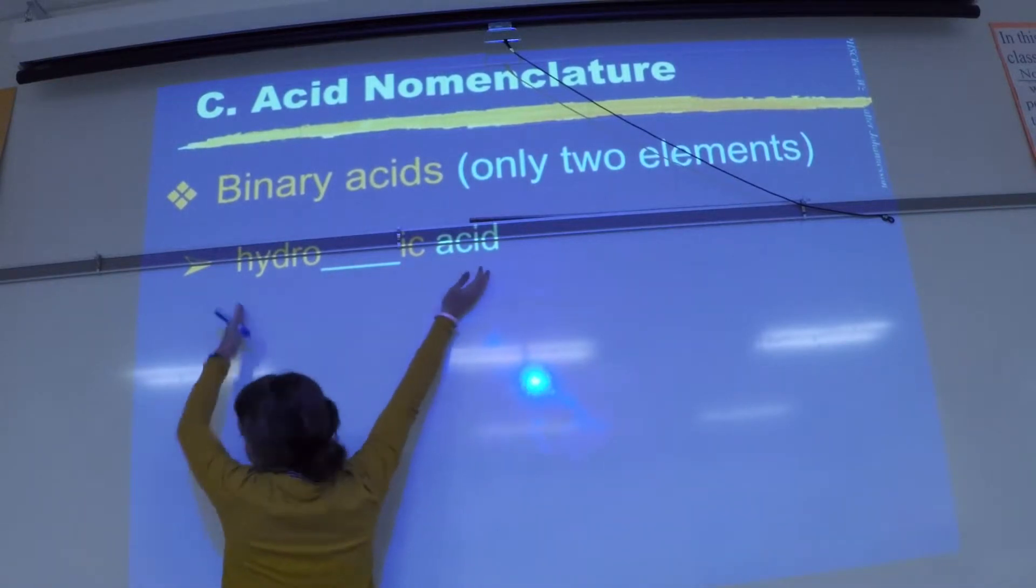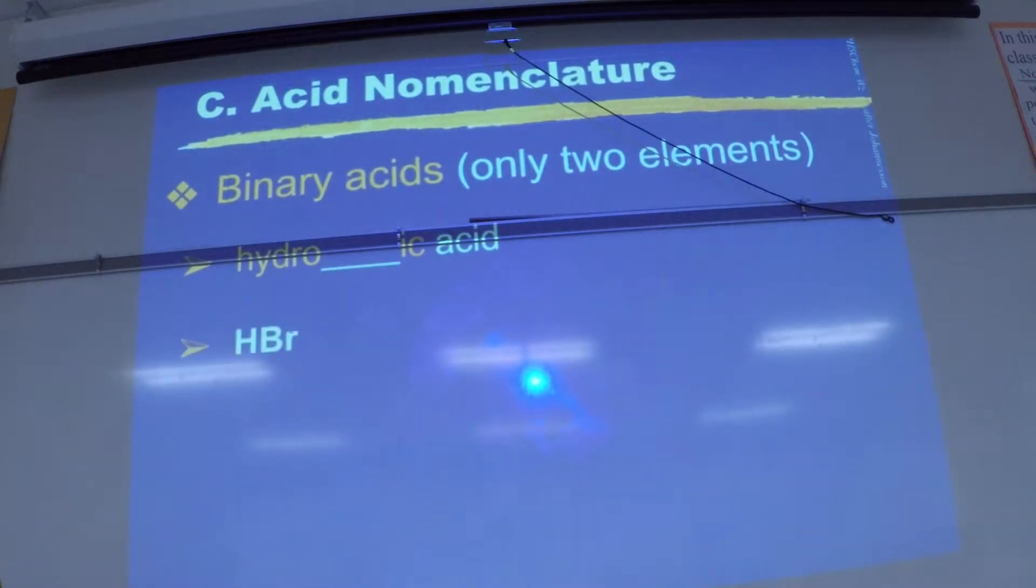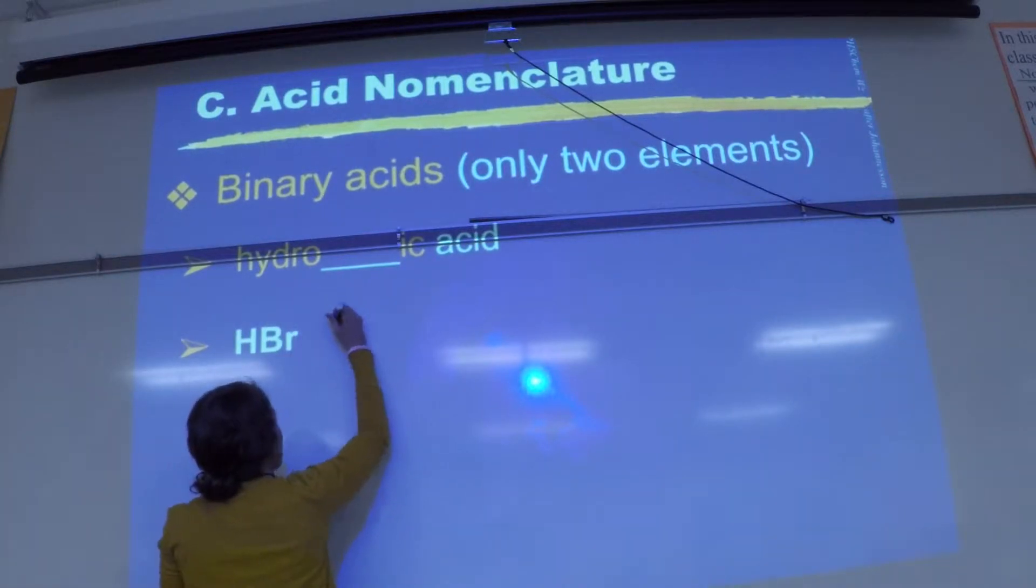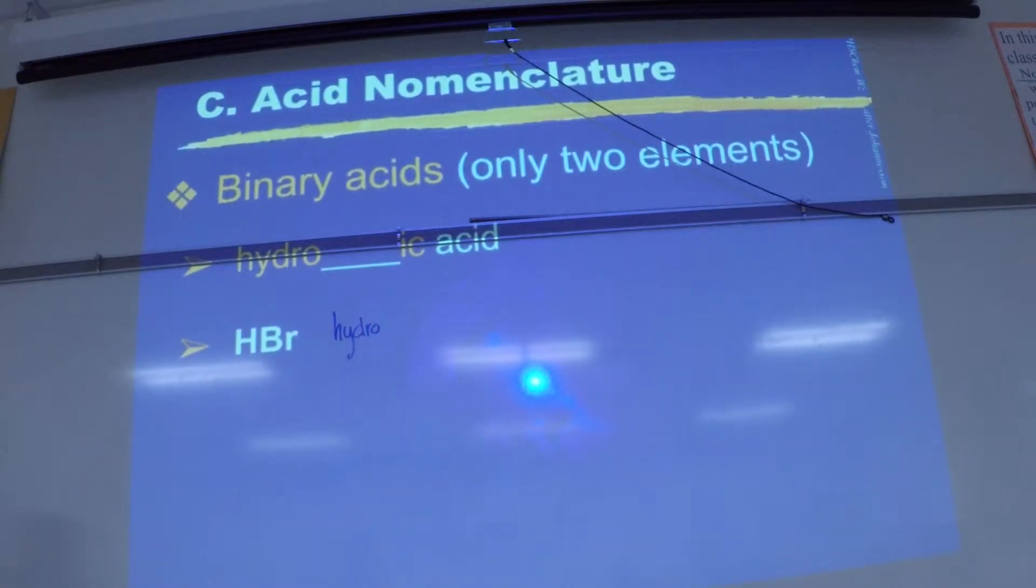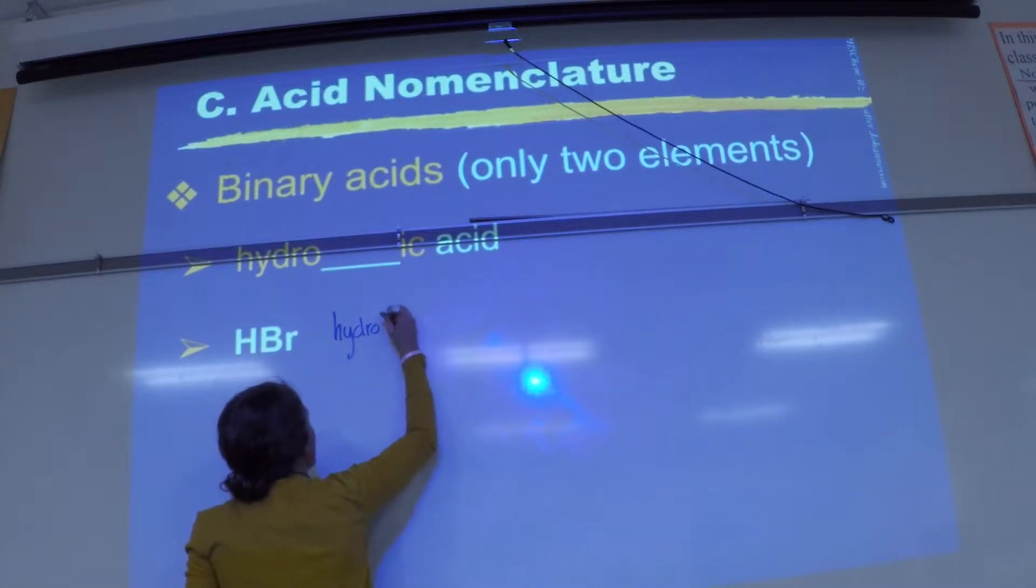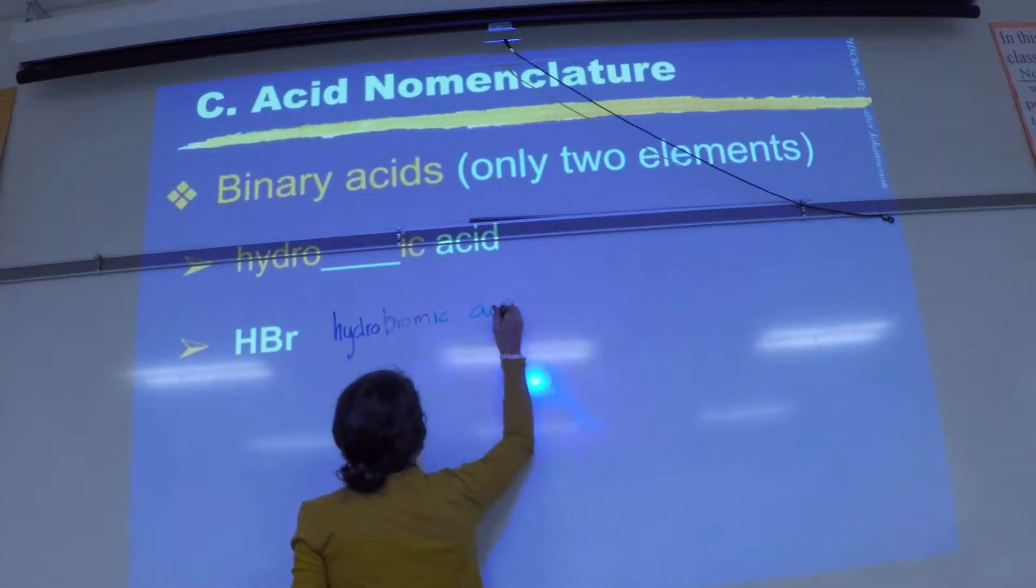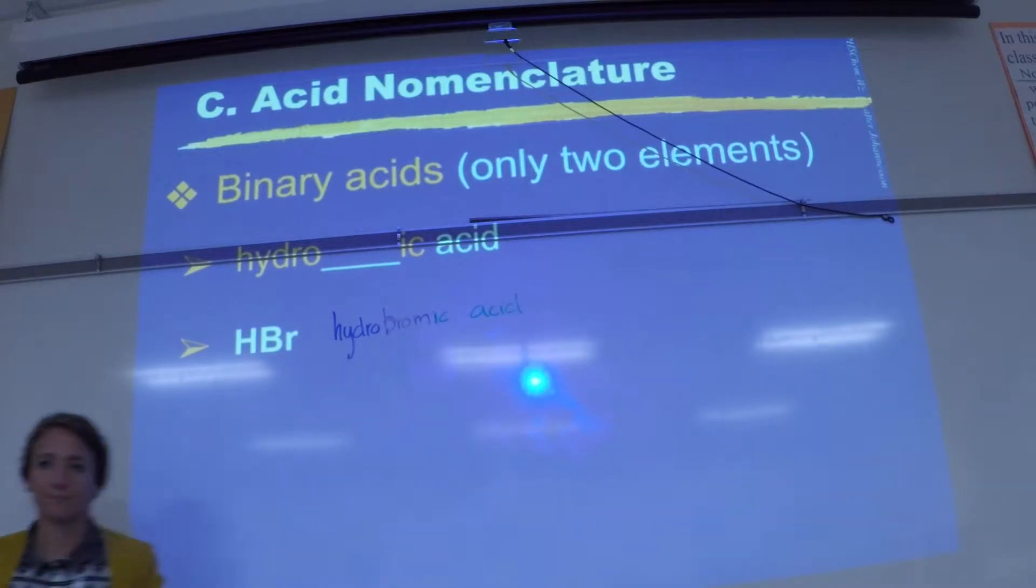So if I gave you HBr, figure out what element this is. So Br is bromine, okay? So you put hydro in front, you got to change the ending of bromine to ic. So it's going to be hydro-bromic acid. So that substance's name is hydrobromic acid.